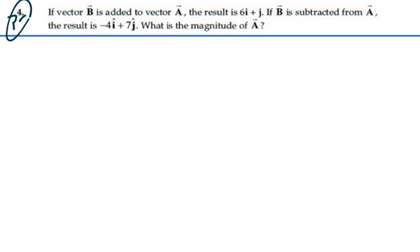So if we add B to A, we have 6i plus j. And if we subtract B from A, we have negative 4i plus 7j.